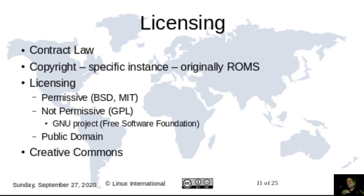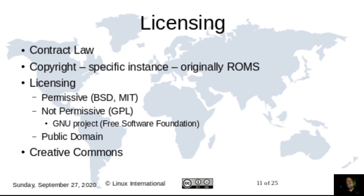Creative Commons is a different type of licensing — it's licensing for data and art. If you write a book, create a movie, or write a song, you can license it through Creative Commons. It gives you specific options: whether the work can be used commercially or only given away, whether changes can be made, and whether you want attribution. Creative Commons Share Alike is much like the GPL because it gives the same requirements to the end user as it did to the developer in the first place.